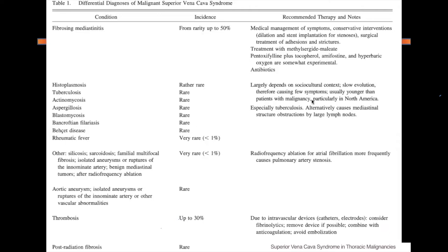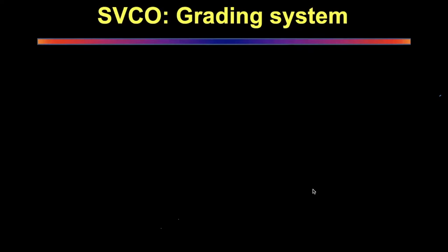Mesothelioma can cause SVC obstruction by causing a fibrous reaction on the mediastinal pleura, engulfing the SVC — very poor prognosis. Lymph node metastases in the mediastinum from ovarian cancer and other diseases can also cause this. This chart from the paper shows the whole list of diagnoses that can present with SVC obstruction. RFA ablation for AF has been causing pulmonary artery stenosis, creating back pressure causing SVC compression — a new phenomenon. Thrombosis now accounts for almost 30% of cases, predominantly from intravascular devices, catheters, and electrodes.